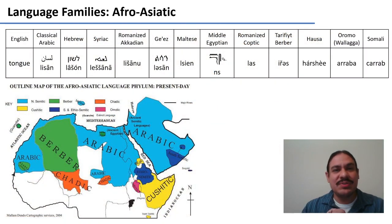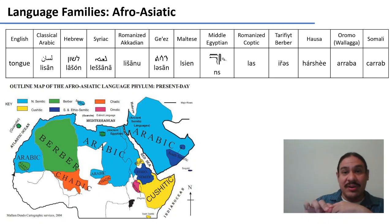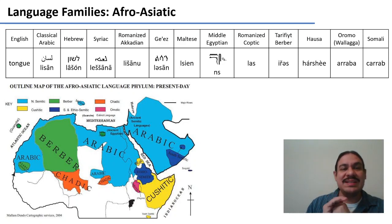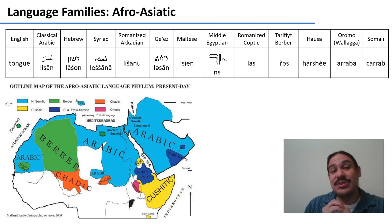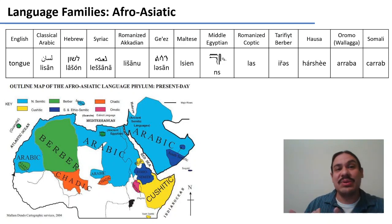Another family spoken by students in the class is called Afro-Asiatic. Afro-Asiatic includes languages like Arabic, Ge'ez (the classical language related to Amharic), and many others. We know that these are related because their words are similar. For example, the word for 'tongue' is 'lisan' in Arabic, 'lisan' in Ge'ez, 'ns' in Middle Egyptian (you can see the hieroglyphs), 'harshe' in Hausa, and 'arrabba' in Oromo. There are sounds like L or R and S that recur across many of these words, and that's how we know they're connected.